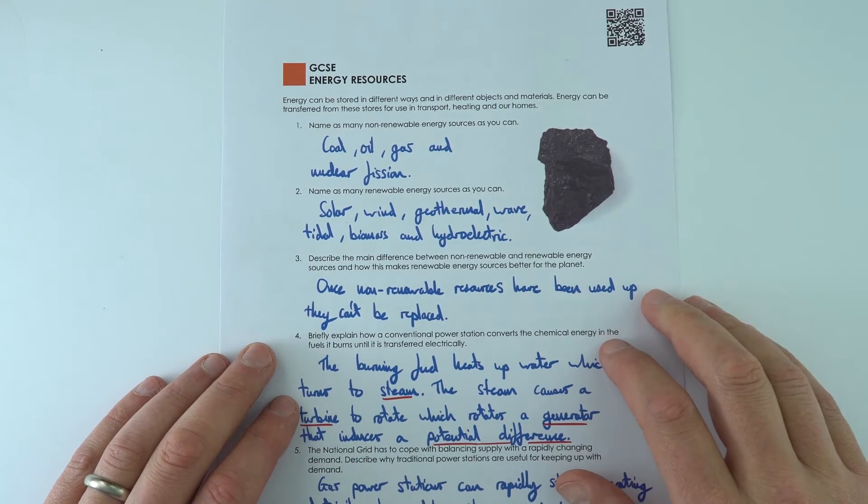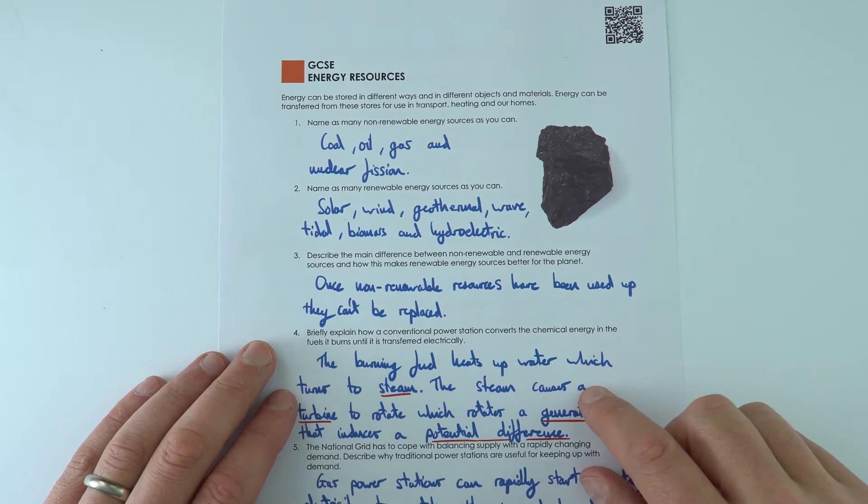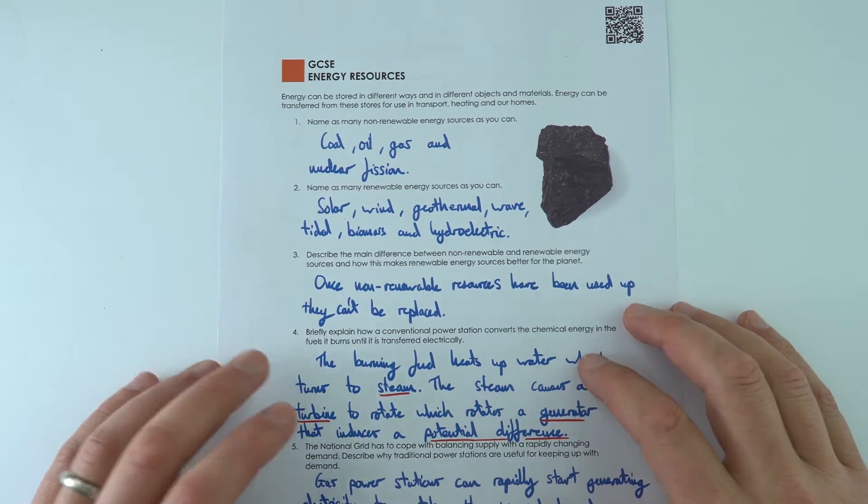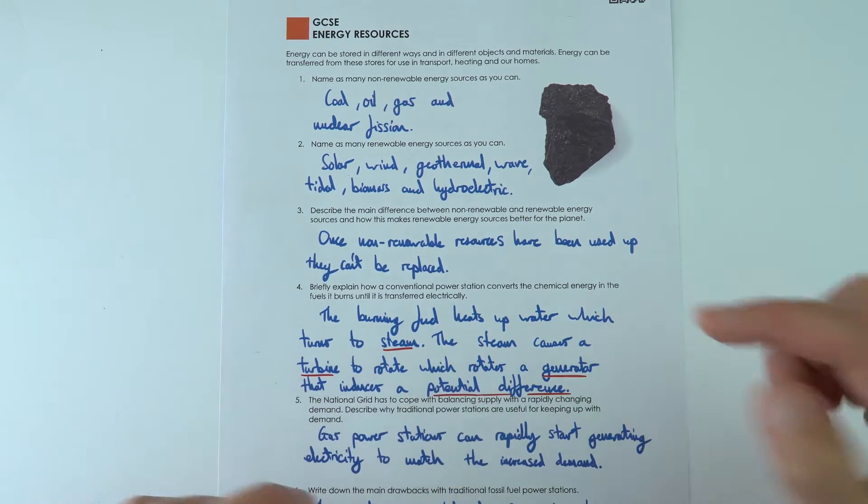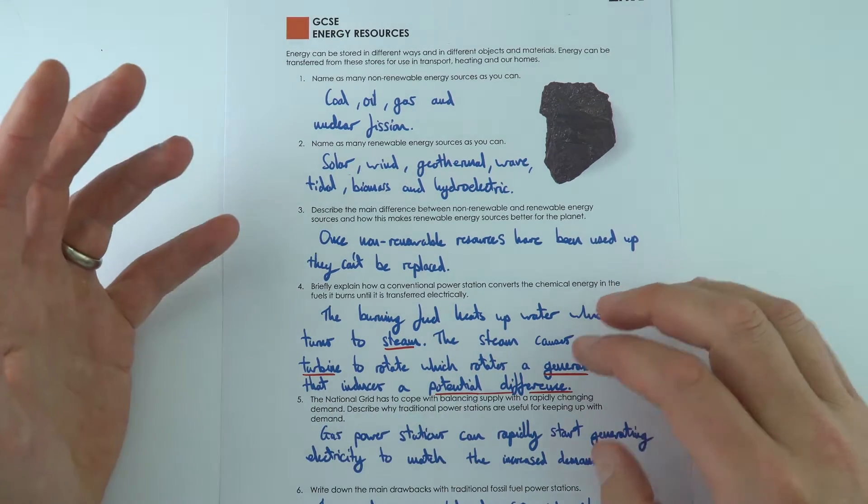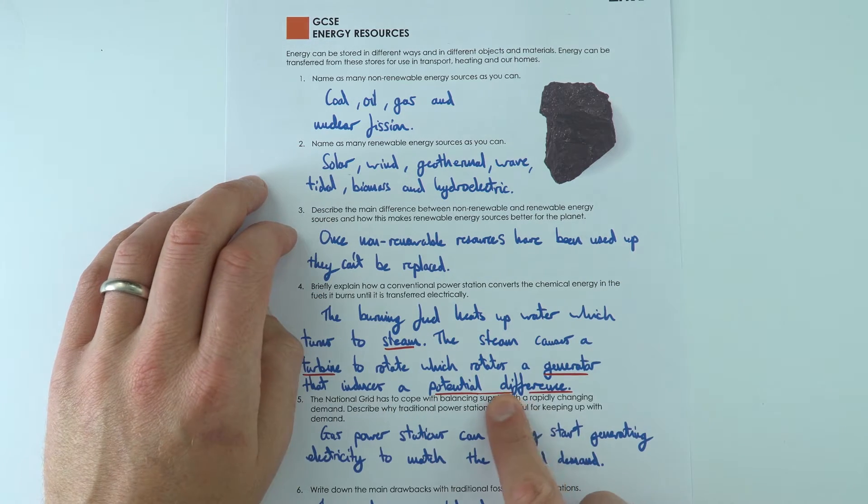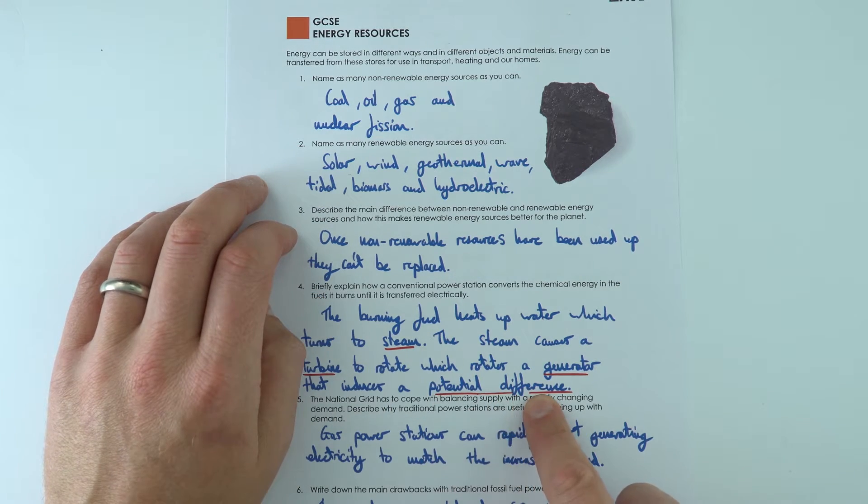The problem with conventional power stations is that they're burning stuff all the time to heat up water, and this hot water turns to steam, which turns a turbine causing a generator to rotate, which then induces a potential difference and therefore an electric current.